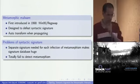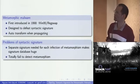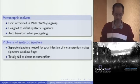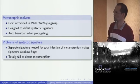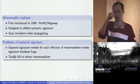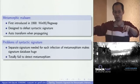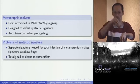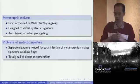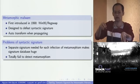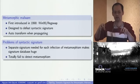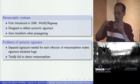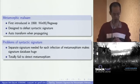What is metamorphic malware? This concept was first introduced about 15 years ago — the malware was named W95/Regswap for Windows 95. Metamorphic malware is designed specifically to defeat syntactic signatures. When the malware infects files, it doesn't inject the same code into two files. It injects two different codes that do the same thing. So two different codes, transformed from one another, do the same thing but are injected into different files. That is the concept of metamorphic malware.